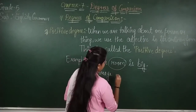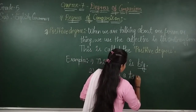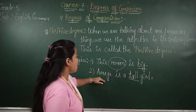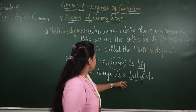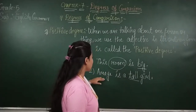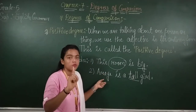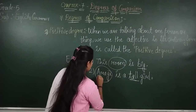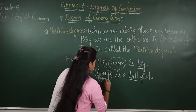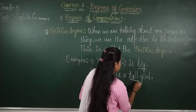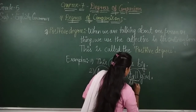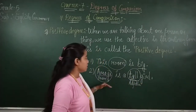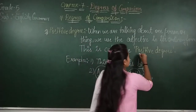Amaya is a tall girl. Here, Amaya is a person — we are talking about only Amaya, only one person. And 'tall' is the adjective. As we know, adjective describes the quality. It is used in its ordinary form. So by this, we can identify that it is a positive degree.